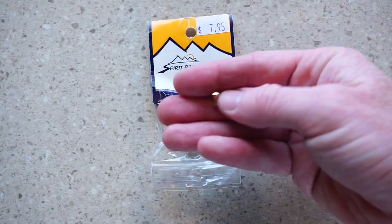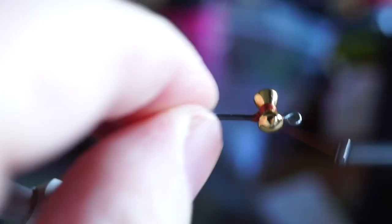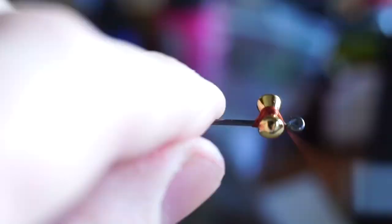Now for dumbbell eyes you can use lead if you want, but I find these brass dumbbells work just fine if you tie them in the right way. Attach the eyes on top of the hook shank using X wraps and under wraps. Make sure they don't spin.